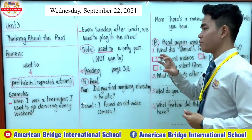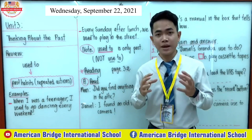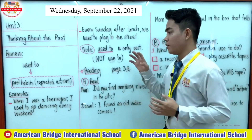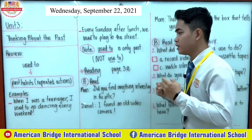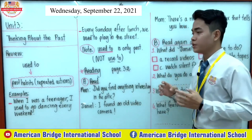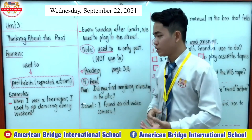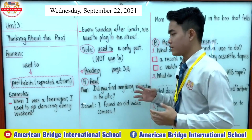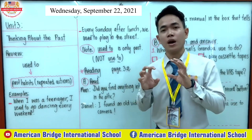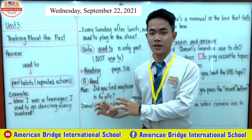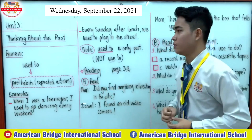We're going to talk about the word 'used to.' We use 'used to' to talk about past habits and also about repeated actions in the past. So now let's see our examples. The first one is: 'When I was a teenager, I used to go dancing every weekend.' This shows us an action that was happening in the past — it is about habits as well.